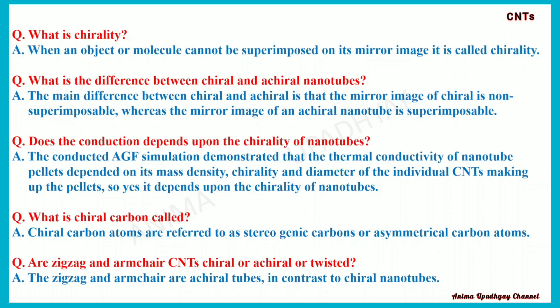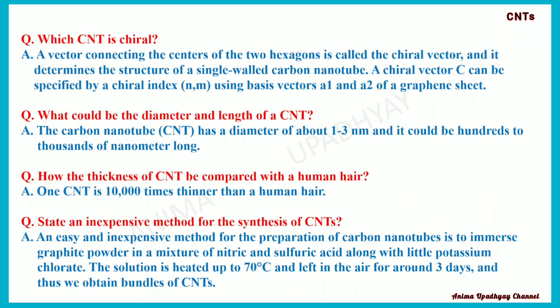What is chiral carbon called? Chiral carbon atoms are referred to as stereogenic carbons or asymmetrical carbon atoms. Are zigzag and armchair carbon nanotubes chiral or achiral? The zigzag and armchair are achiral tubes, in contrast to chiral nanotubes. A vector connecting the centers of two hexagons is called the chiral vector, and it determines the structure of a single-walled carbon nanotube. A chiral vector C can be specified by a chiral index (N, M) using basis vectors A1 and A2 of a graphene sheet.